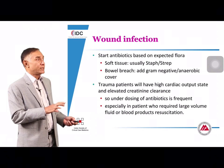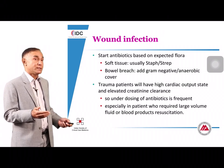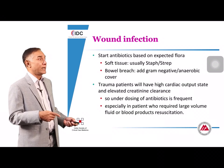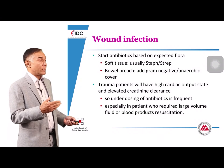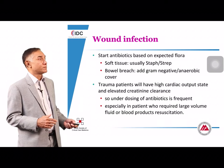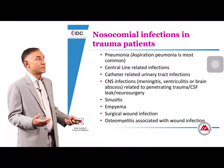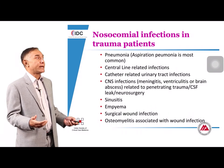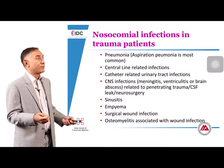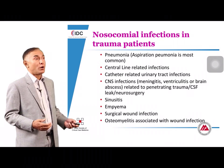For soft tissue wound infections, Staph or Strep are typical; if there has been a bowel breach, add gram-negatives and anaerobes. Be careful not to underdose: trauma patients are often young with increased creatinine clearance, so use the high end of recommended dosages, especially in sick patients. In addition to site-specific infections, these patients can develop pneumonia, central line infections, urinary tract infections, CNS infections in penetrating neurotrauma, sinusitis, empyema, and surgical site infections.